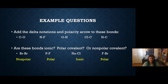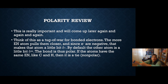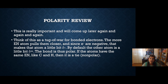Polarity review: polarity is very important and we're going to talk about this over and over again in other chapters. Think of it as a tug-of-war for bonded electrons. The more electronegative atom — whoever is closest to fluorine — pulls the electrons closer and wins the tug-of-war. Because electrons are negative, that makes that atom a little bit negative, represented with delta-minus. By default, the other atom is a little bit positive, delta-plus. Thus, the bond has two poles, so it's polar. If the atoms have the same electronegativity, like bonded to yourself or C-H, then it's a tie — no one wins the tug-of-war and it's nonpolar. Good luck, catch you later.